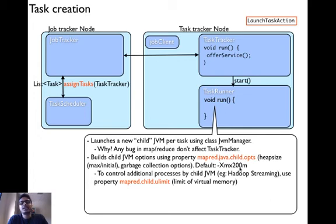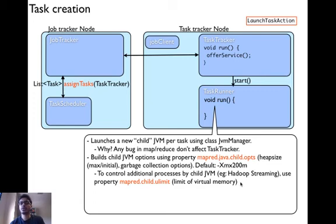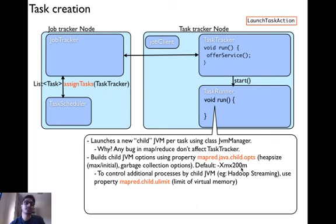To control additional processes that a child JVM can create, you use the property MapRed.child.ulimit. You need this because Hadoop allows you to write maps in different programming languages, not just Java — for example, Hadoop Streaming. In that case, specifying Java's maximum heap size does not control the virtual memory used by a map written in C++. So if you want to limit that as well, you need to use MapRed.child.ulimit.